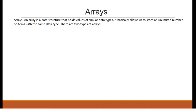Arrays. An array is a data structure that holds values of similar data types. It basically allows us to store an unlimited number of items within the same data type. There are two types of arrays.